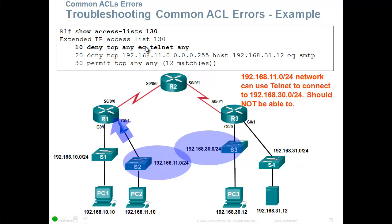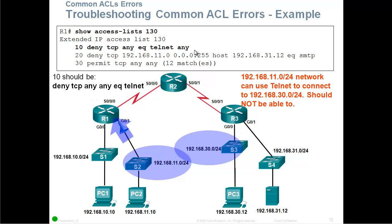Looking at the statements: statement number 10 says deny TCP any, any equal to Telnet anywhere. Statement number 20 says deny TCP 192.168.11 network to this server if they're using SMTP, and then permit any any. There are 12 matches and we can Telnet, but we shouldn't be able to. Look at the order — the source is never going to have Telnet port 23 as a source port. The source is going to have a randomly generated port, while the destination is going to have port 23. So it should be deny TCP any, any equal to Telnet at the destination end.